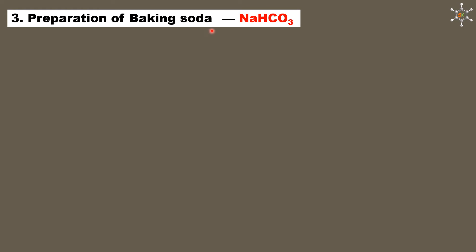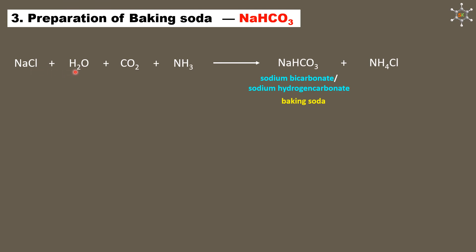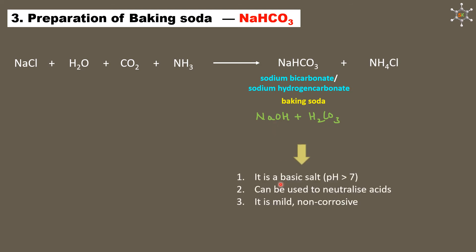Baking soda (NaHCO3, sodium bicarbonate or sodium hydrogen carbonate) is prepared when sodium chloride reacts with water, carbon dioxide, and ammonia. Ammonium chloride is also produced as a byproduct. NaHCO3 is made up of the strong base sodium hydroxide and the weak acid H2CO3; since the strong component is basic, sodium bicarbonate is a basic salt with pH greater than 7.